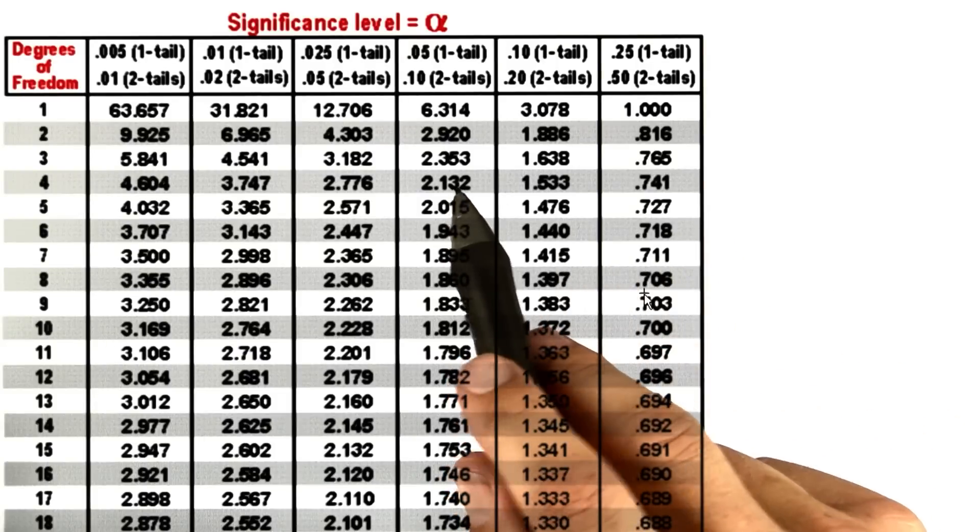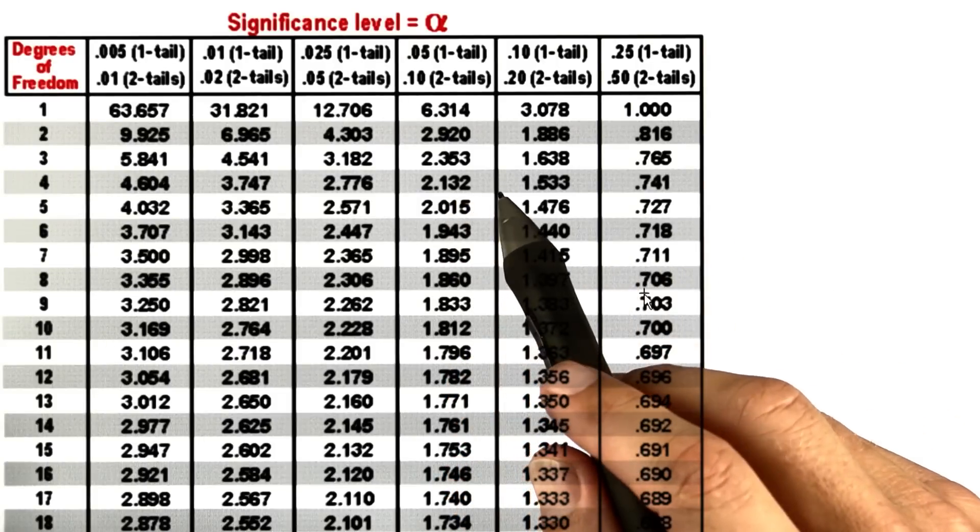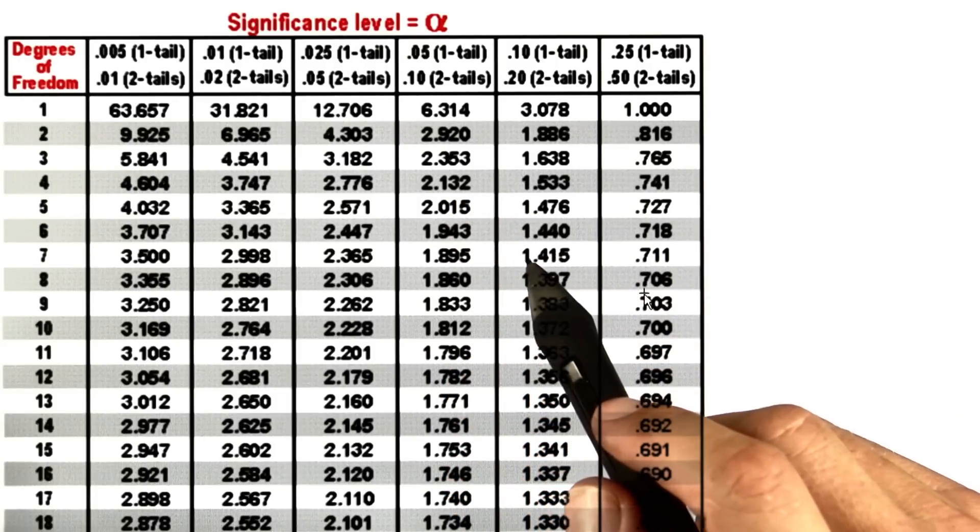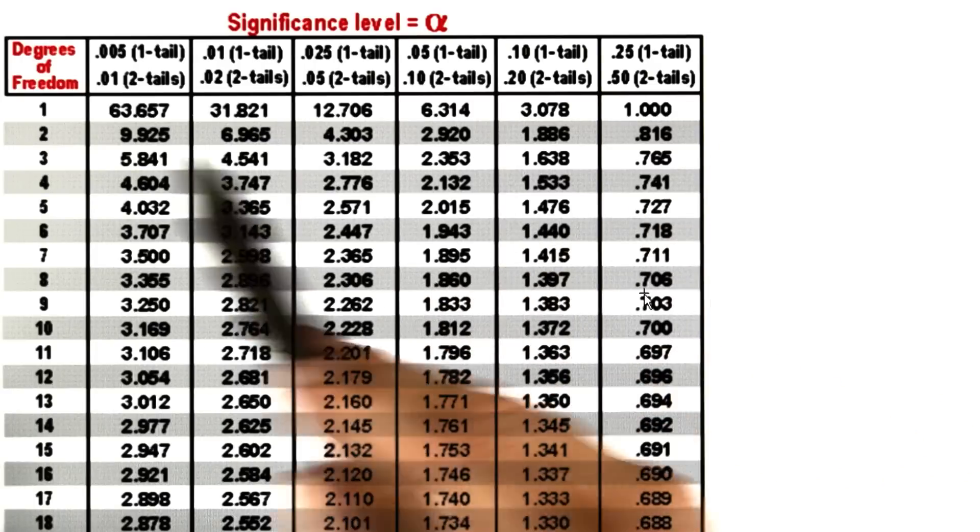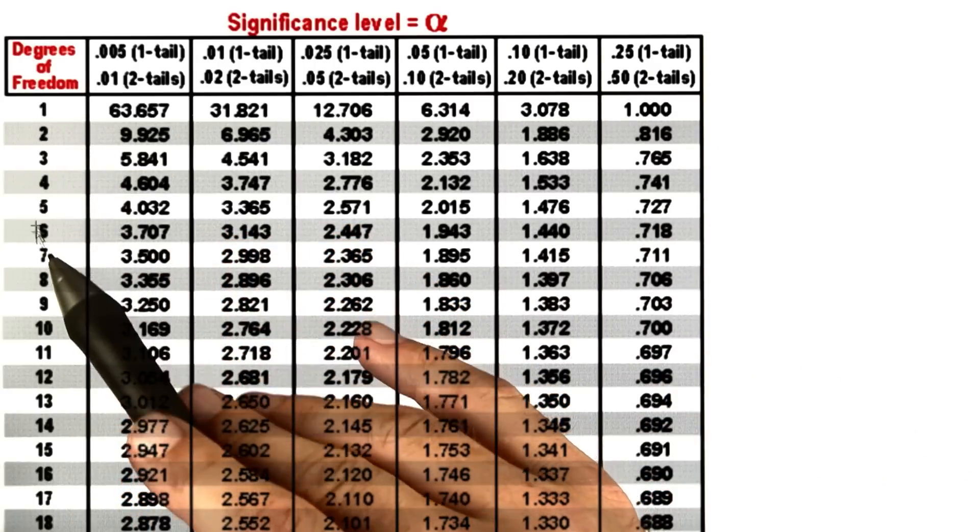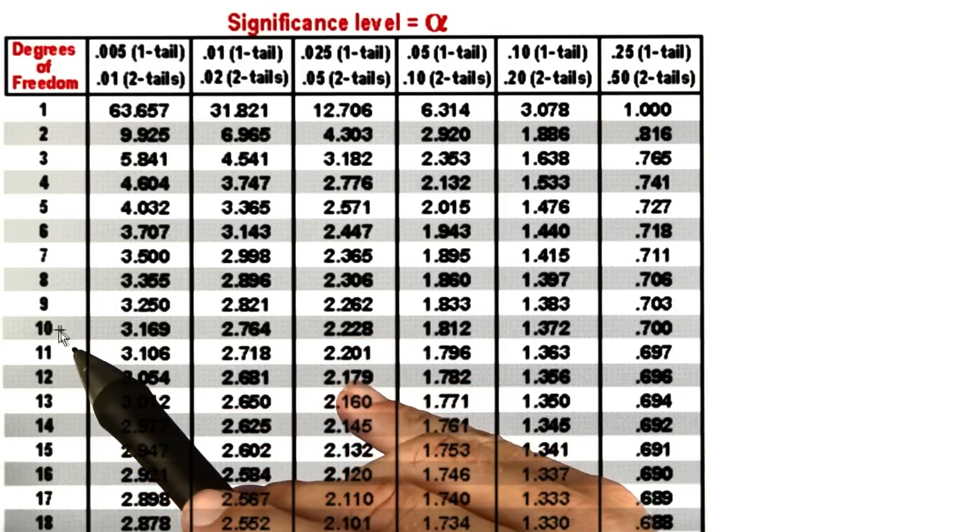So here is a t-table that applies to statistical estimates with fewer than 30 samples. And the way to read this is on the left you see the degrees of freedom, which is the number of samples minus 1.